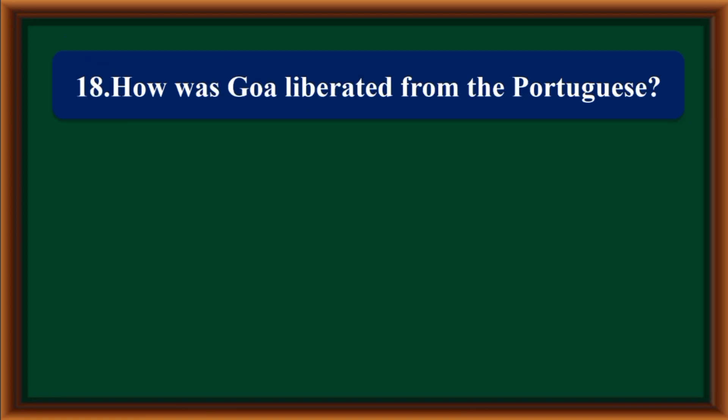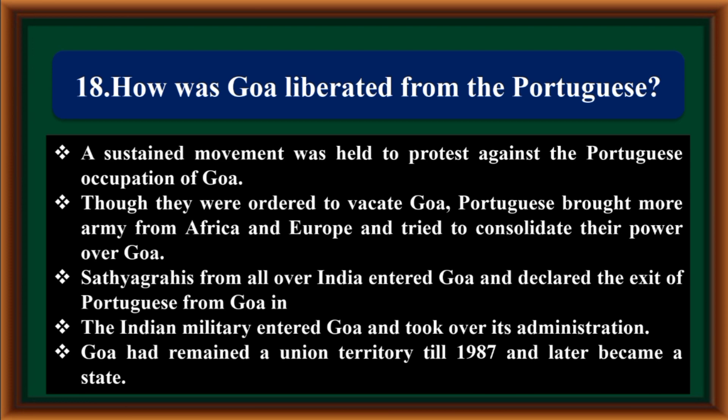How was Goa liberated from the Portuguese? A sustained movement was held to protest against Portuguese occupation of Goa. Though ordered to vacate, the Portuguese brought more armies from Africa and Europe to consolidate their power. Satyagrahis from all over India entered Goa and declared the exit of the Portuguese. The Indian military entered Goa and took over its administration. Goa remained a Union Territory till 1987 and later became a state.